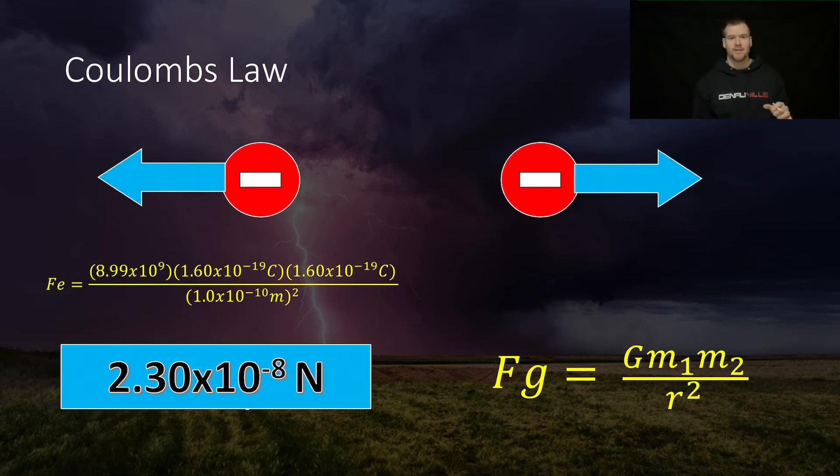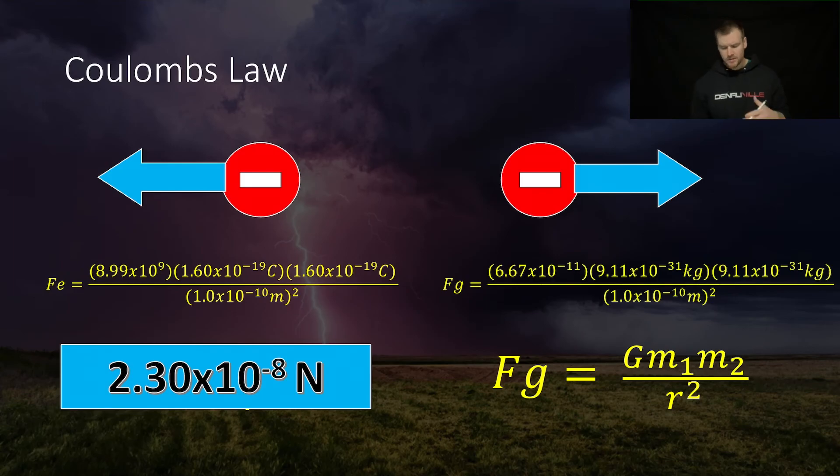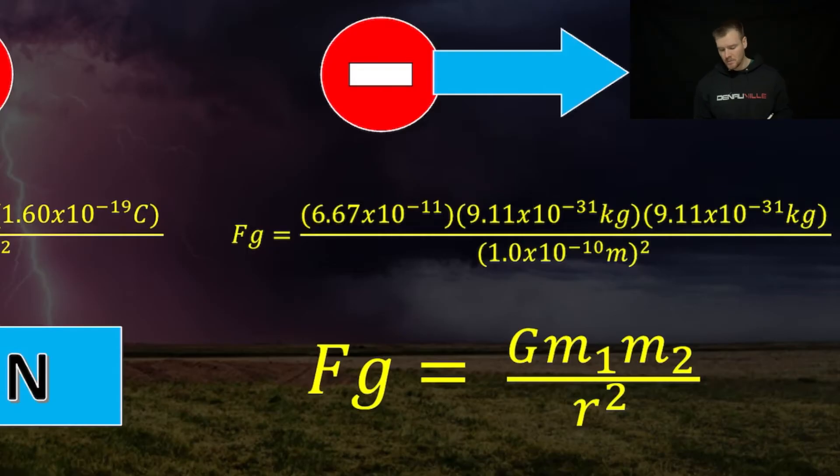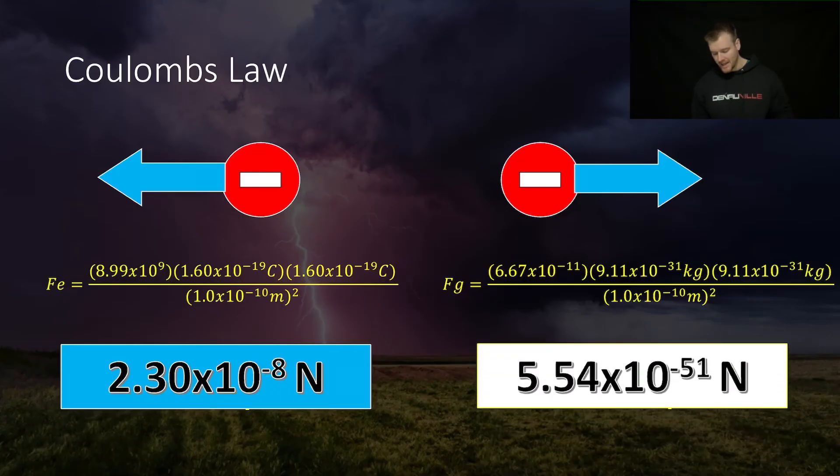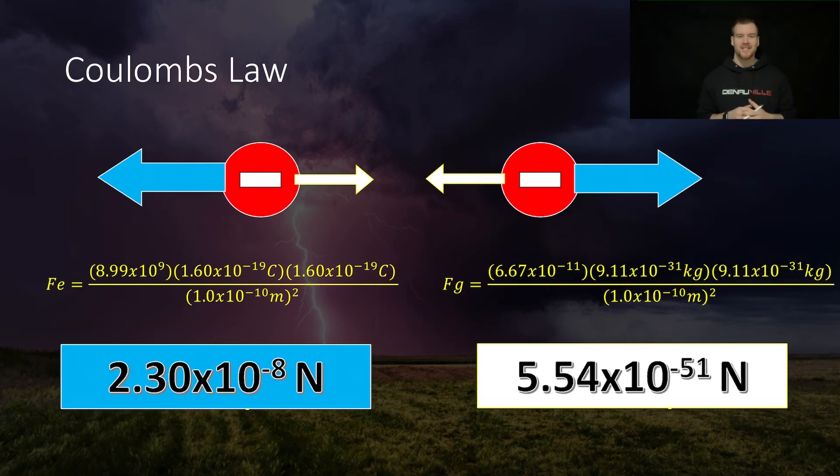Now let's look at the gravitational force. These two masses are going to be attracted to each other. We saw this last year from gravity. So let's plug into the equation. My constant for gravity is 6.67 times 10 to the negative 11. The masses of an electron from your data sheet are 9.11 times 10 to the negative 31. And again, the same radius apart. When I plug that in, I get 5.54 times 10 to the negative 51.